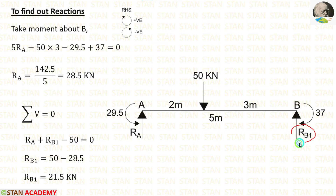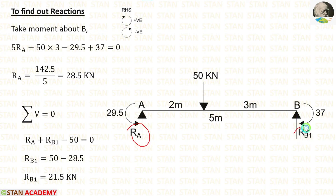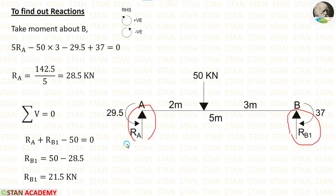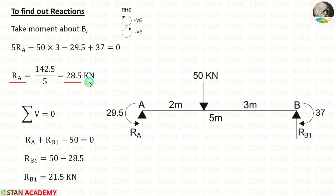To calculate RB1, let us apply the rule: summation of vertical forces equals 0. In this span there are three vertical forces: RA, RB1, and the point load 50 kN. The reactions RA and RB1 are acting upwards, so both are positive. The 50 kN is acting downwards, so it is negative. We have already calculated RA as 28.5, so applying this value we can calculate RB1 which is equal to 21.5 kN.